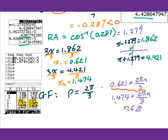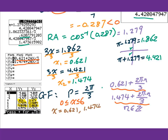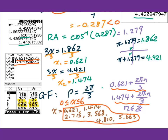Therefore, the general form is 0.621 plus 2pi times n over 3, and 1.474 plus 2pi times n over 3, where n is an integer. Put this general form into the graphing calculator — remember that n changes to x, so it's 2pi times x over 3. Then check the table for solutions between 0 to 6. The solutions are x equals 0.621, 1.474, 2.715, 3.568, 4.810, and 5.663. Altogether, there are 6 solutions between 0 to 6.